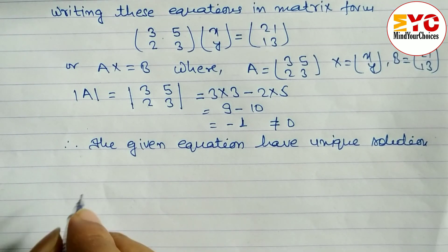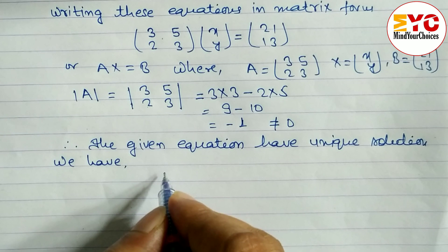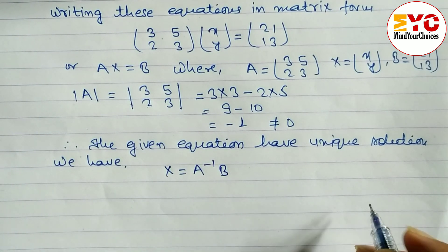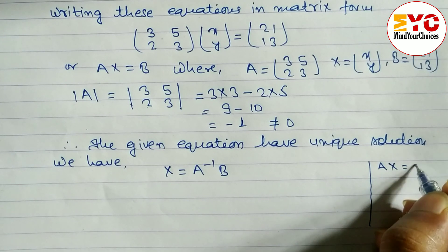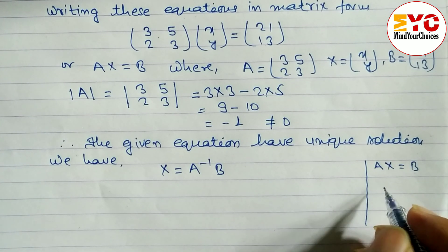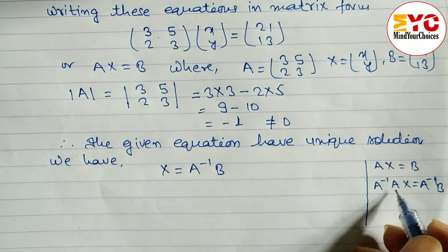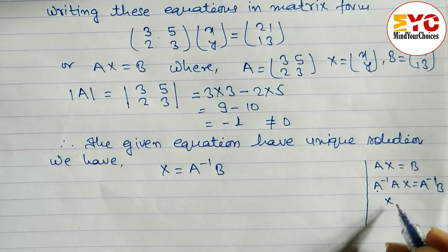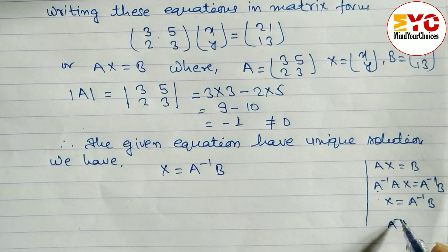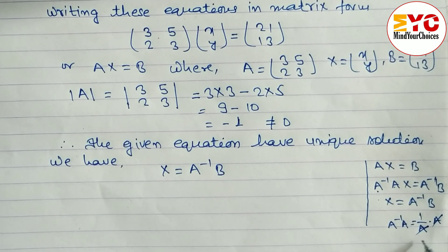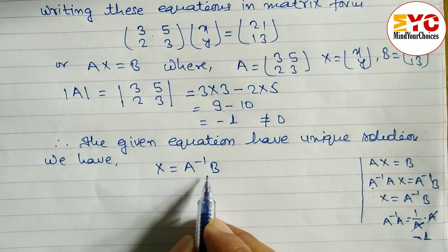Therefore the given equations have a unique solution. Since AX equals B, we multiply both sides by A inverse to get A inverse times A times X equals A inverse times B. The A and A inverse cancel, leaving X equals A inverse B — just like 1 over A times A equals 1, so we get X equals A inverse B, meaning [x; y] equals A inverse times B.